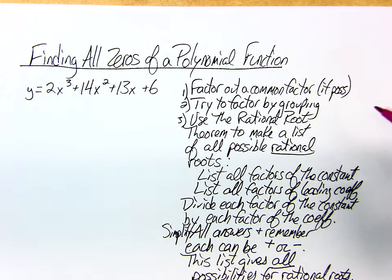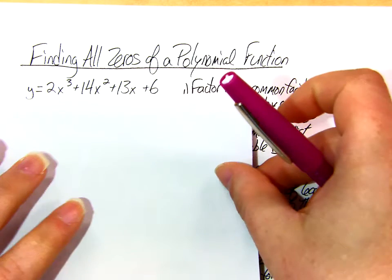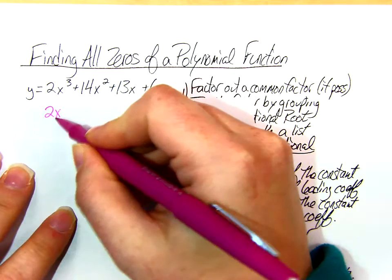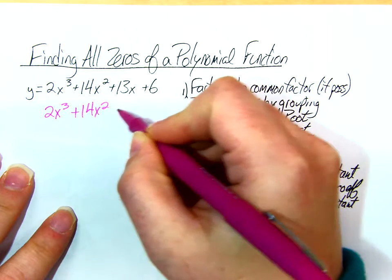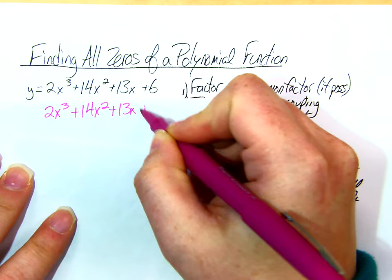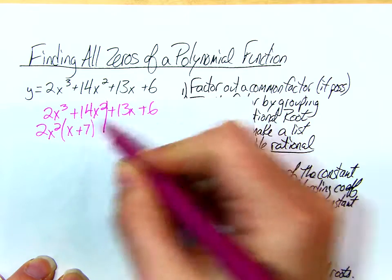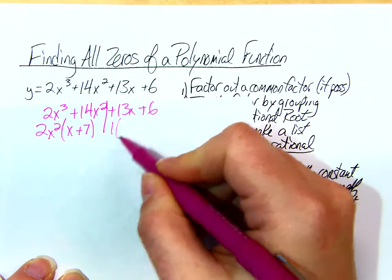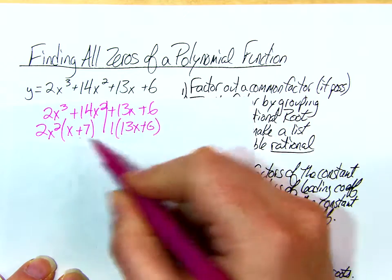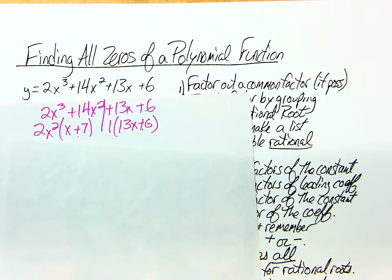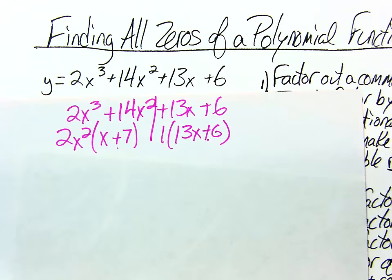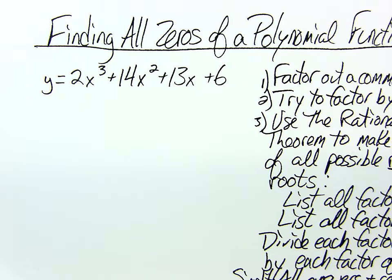So then you should always try to factor by grouping if you can, that's going to save you a ton of time. But watch if I try. Don't write this down because this isn't going to work, but I just want to show you that you should at least give it a shot. If I try and split this in half and factor from this side, I can take out 2x² and I'd be left with x+7. There's nothing to take out here, even if I take out a 1. My parentheses are never going to match. They're never going to match, so this can't be factored by grouping. But if it can, do it because that's going to save you a ton of time.